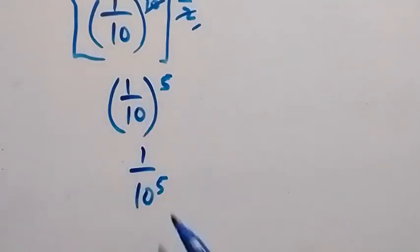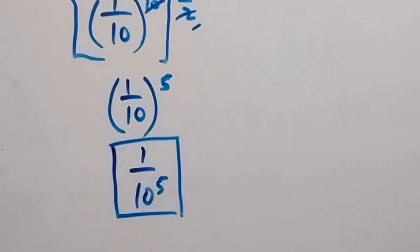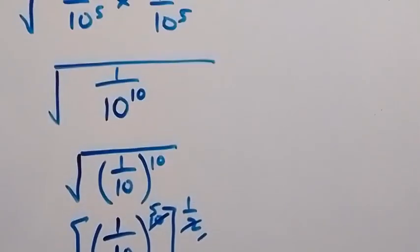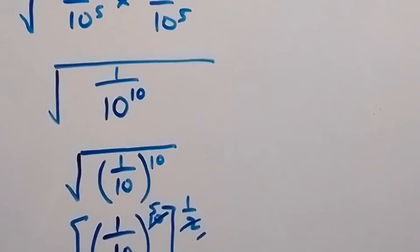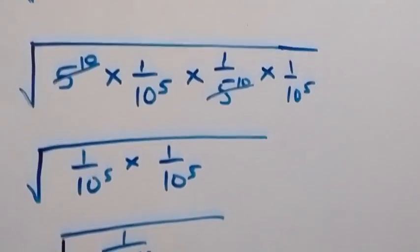Which we can write again as 1 over 10 raised to power 5, since 1 raised to power 5 is 1. So here we have the simplified form of this problem. Thank you for watching — don't forget to subscribe for more exciting videos, turn on the notification bell, share this video, give it a thumbs up, and put your comment in the comment section.